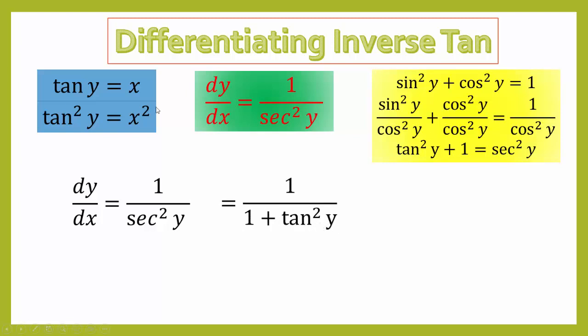Now what do we know about tan²y? Over here in the blue box, tan²y = x². So we can change that into 1/(1 + x²). Therefore, the derivative of inverse tan of x is 1/(1 + x²).